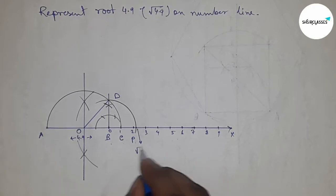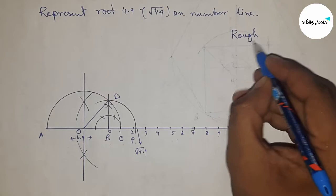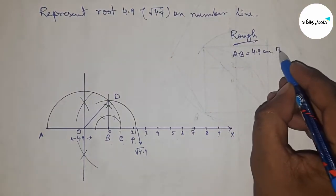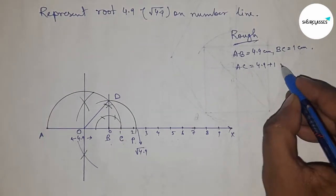And this is the representation of root 4.9 on the number line. So now let's roughly discuss the calculation of root 4.9. Given AB equals 4.9 and BC equals 1 centimeter, so AC equals 4.9 plus 1 equals 5.9 centimeters.